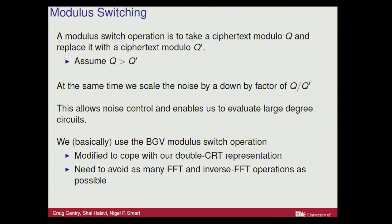Modular switching is the noise control operation in the BGV scheme. It allows us to scale down the noise in an FHE scheme - since the noise grows with every operation, we want to keep pushing the noise down so decryption works in the end. We modify modular switching slightly to work with the double CRT representation, again trying to minimize the number of FFT operations. See the paper for full details.